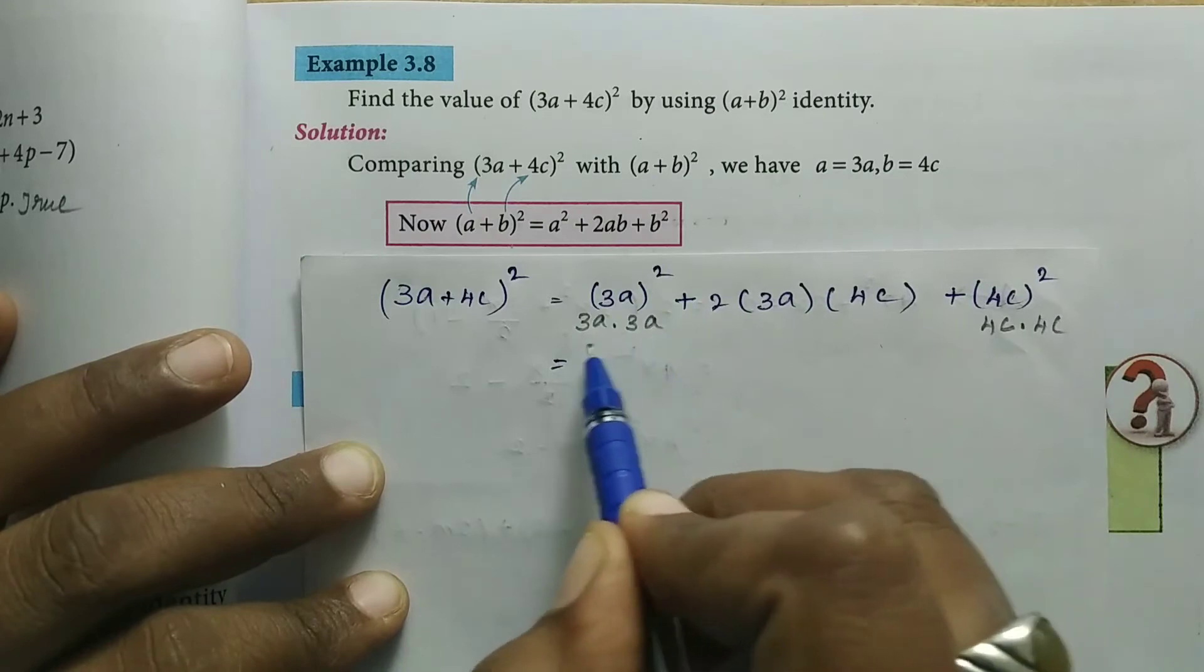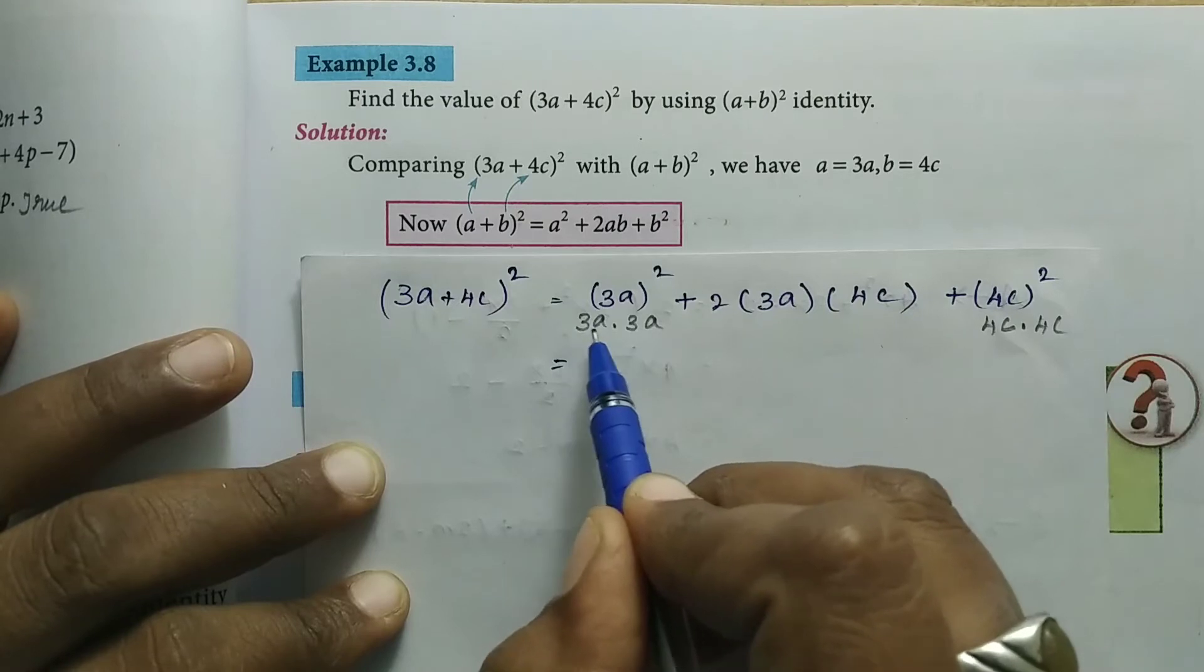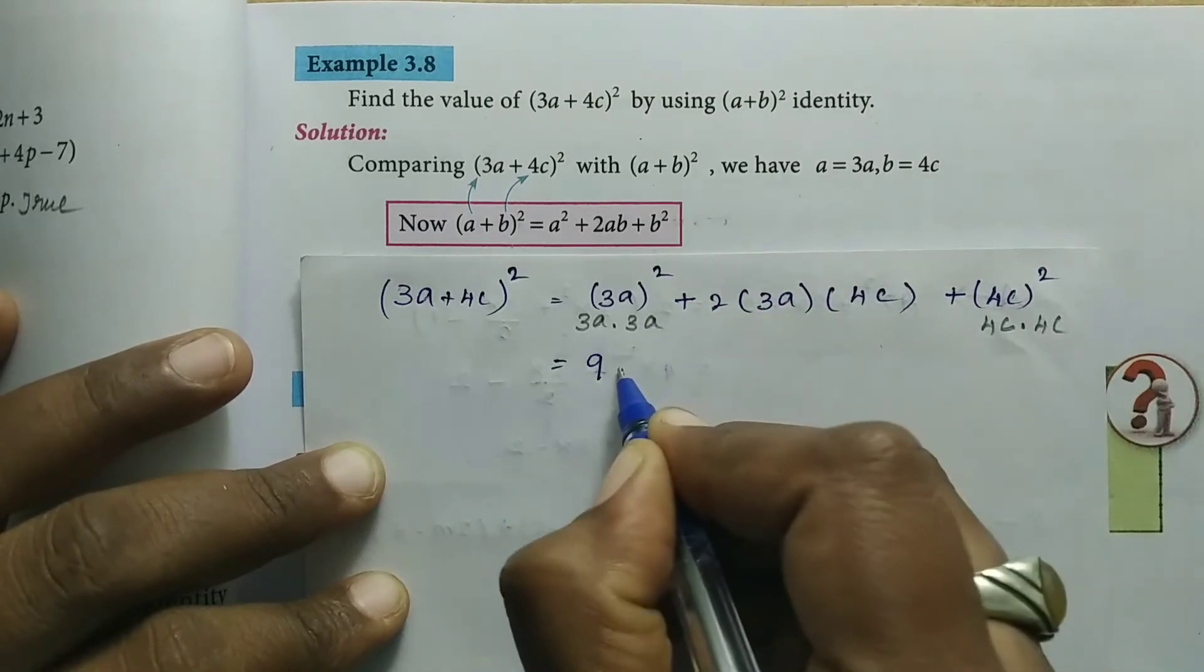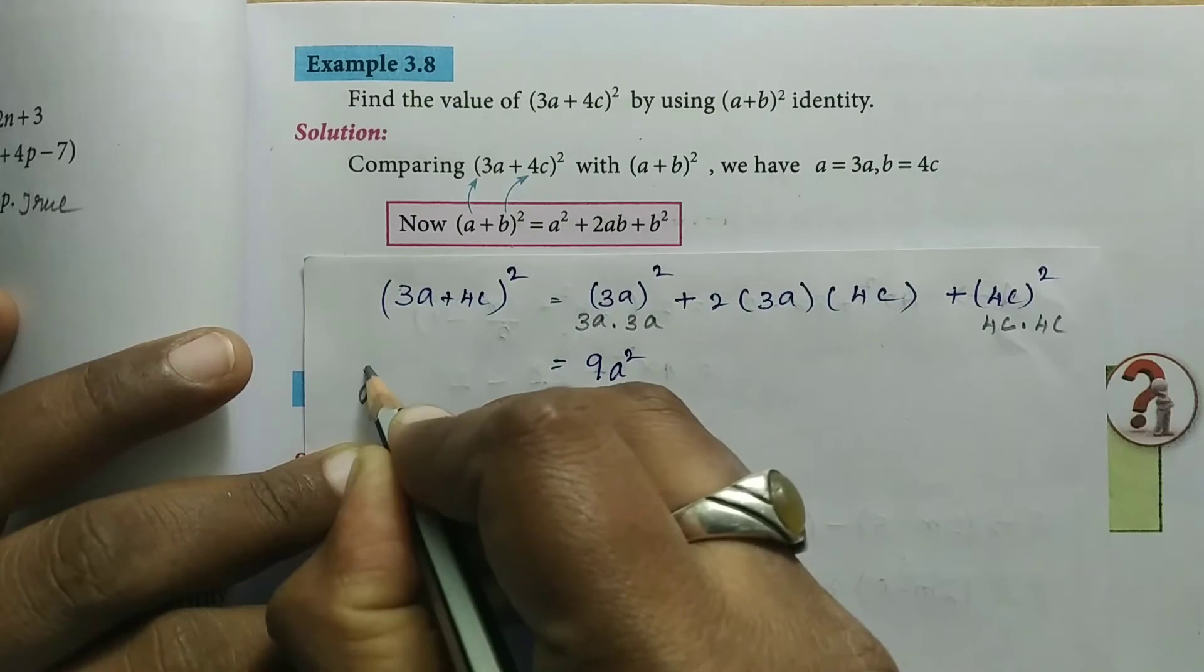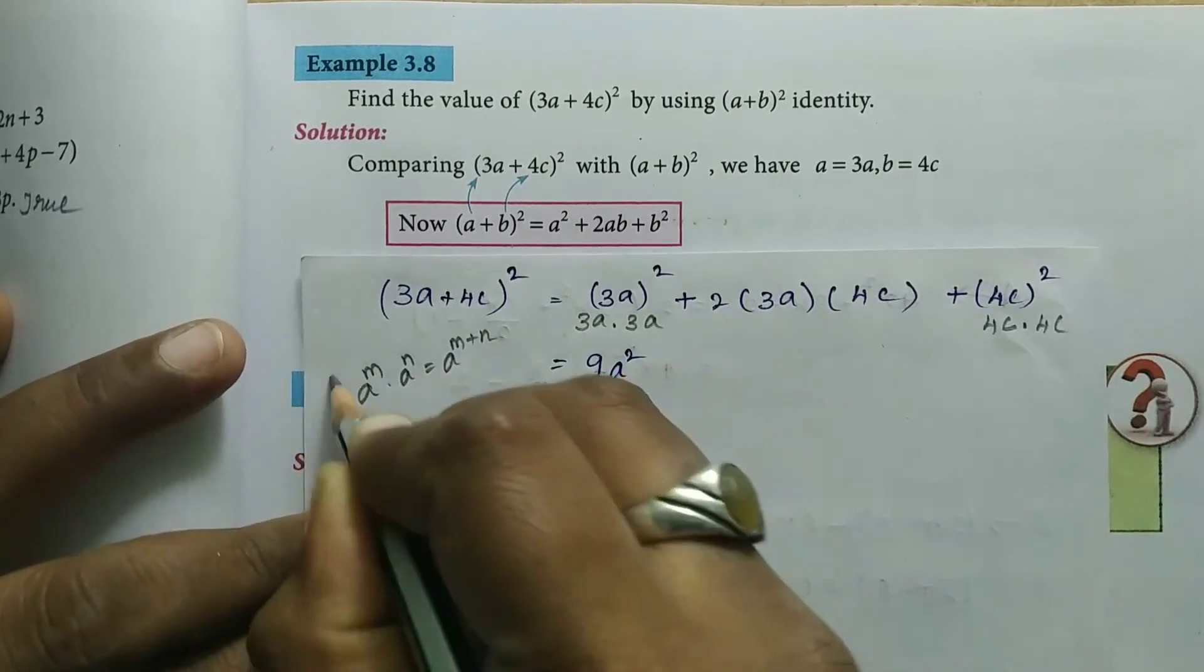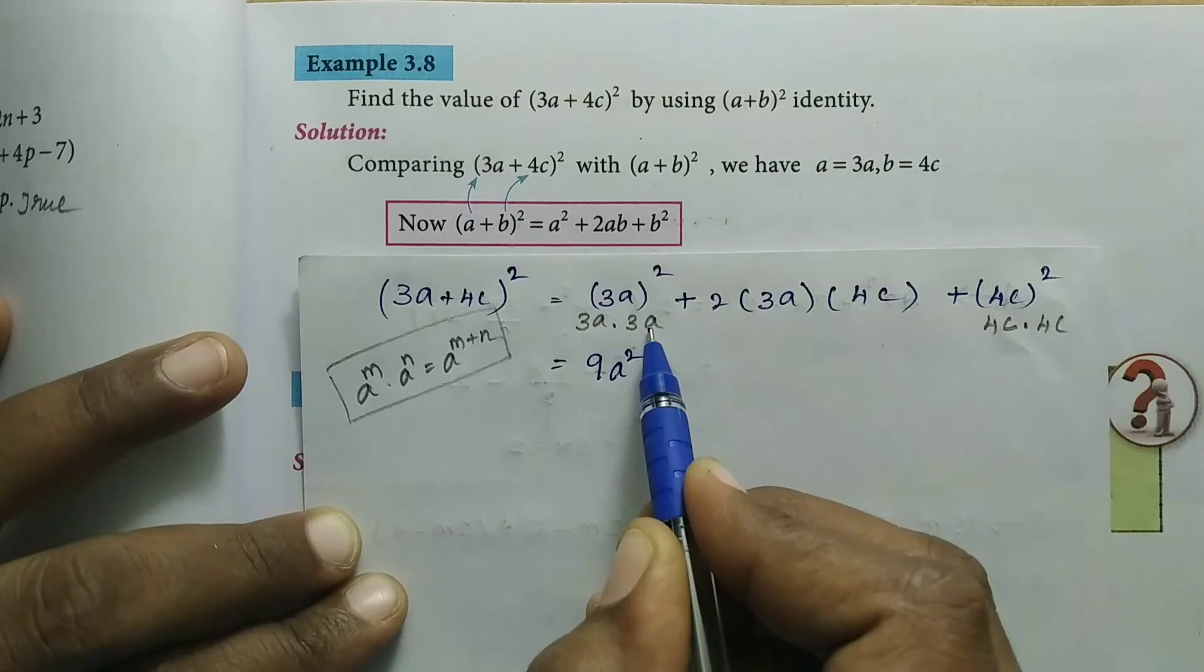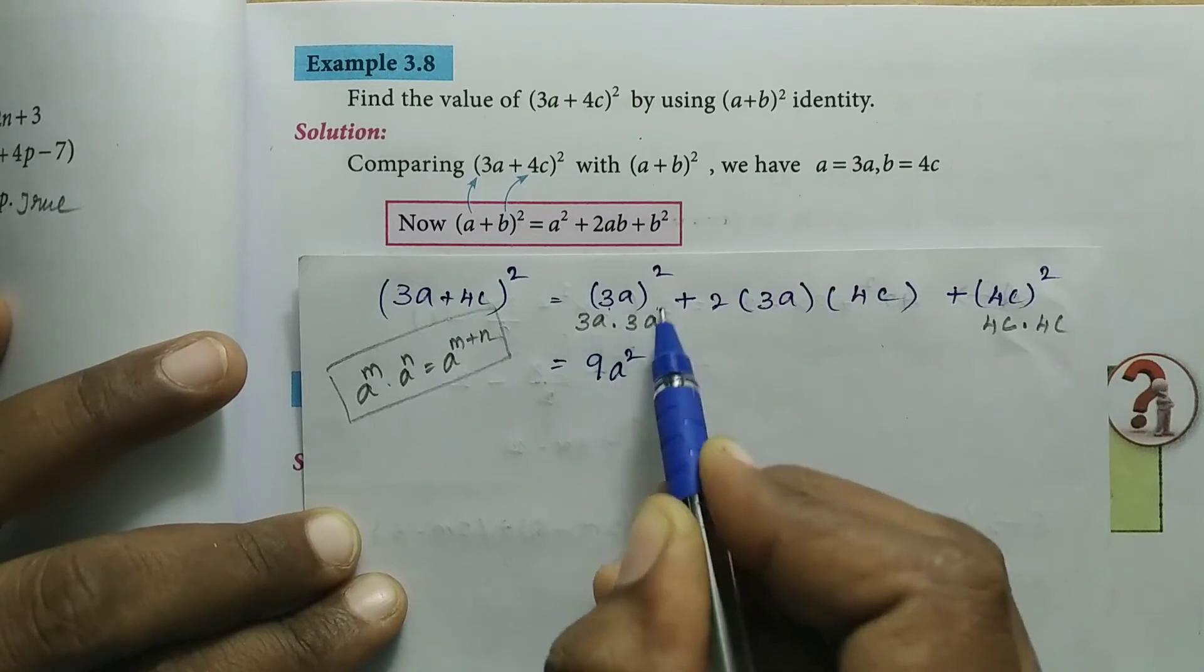For the whole square, we multiply twice. First, multiply the numbers: 3 × 3 = 9. Then multiply the variables: a × a = a². We use the formula aᵐ × aⁿ = aᵐ⁺ⁿ. So a¹ × a¹ = a¹⁺¹ = a².